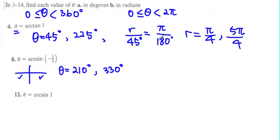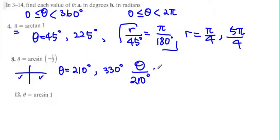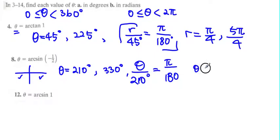Using the same conversion ratio, instead of 45 degrees we put 210: theta over 210 degrees equals pi over 180. Solving, one answer is 7 pi over 6. Then 330 degrees becomes 11 pi over 6.